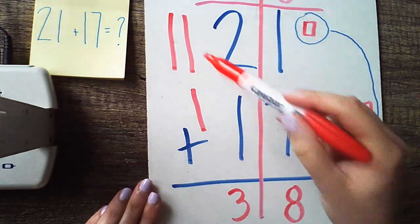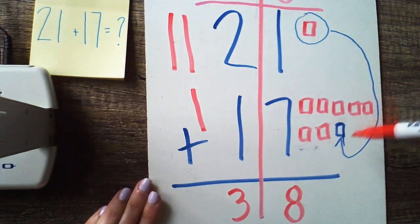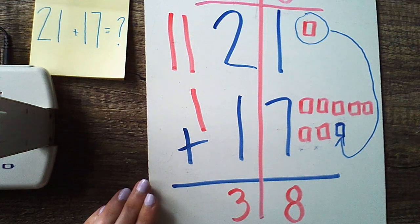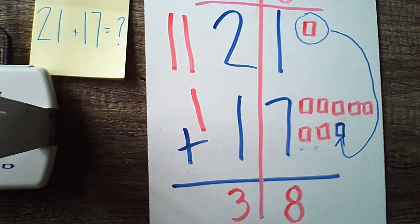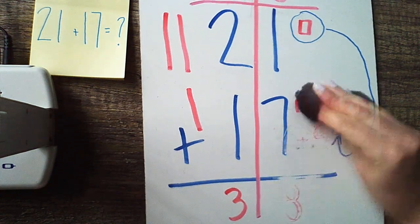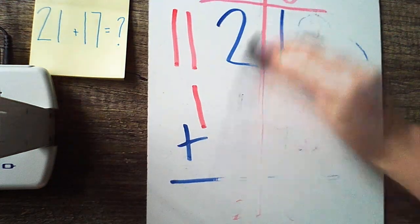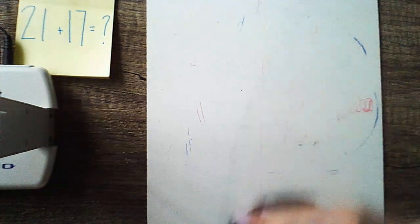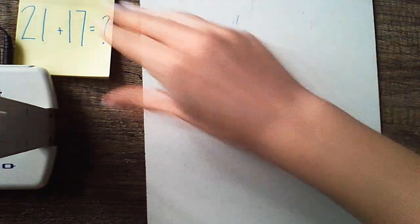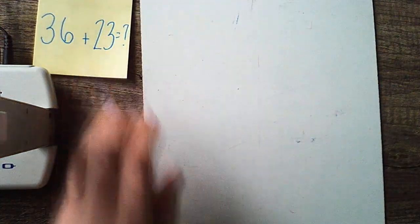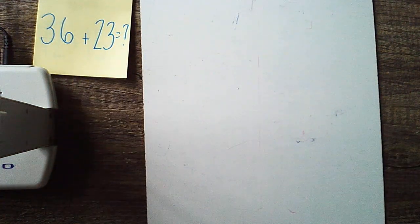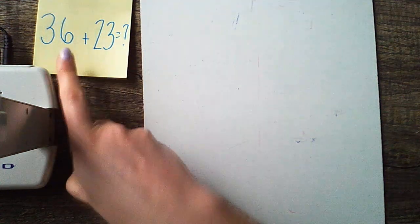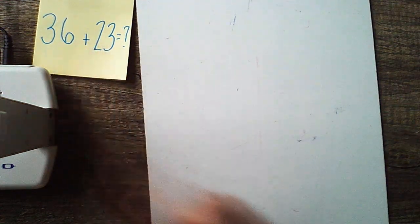I drew a picture to show my groups of 10 and also drew pictures to show my ones. That's a great strategy because whenever you're taking a test or working out a problem you'll always have a scrap piece of paper and a pencil to draw these pictures. Let's move on to the next problem — if you'd like, you can answer this one right along with me and check your work as we go. The next problem we're going to solve, adding two digit numbers plus two digit numbers, is 36 plus 23.